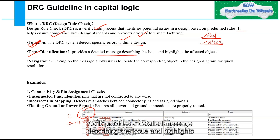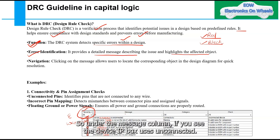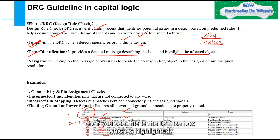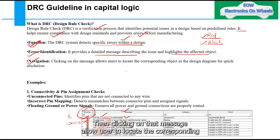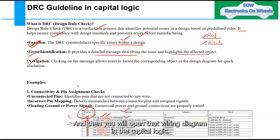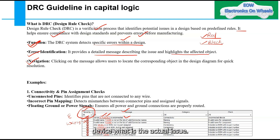For error identification, DRC provides a detailed message describing the issue and highlights the affected object. For example, under the message column it may show 'device IP fuse box is unconnected,' and the IP fuse box will be highlighted as the affected component. Clicking on the message will navigate you to the corresponding object in the wiring diagram for quick resolution.